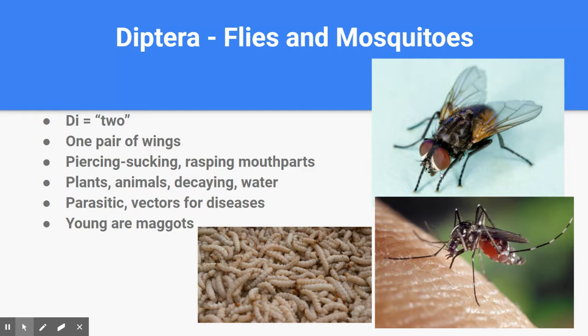Our next group is Diptera — the flies and mosquitoes. In science, 'di' means two, as in dihydrogen meaning two hydrogen atoms. However, the reason flies and mosquitoes get this name is that they only have one pair of wings. Most insects have two pairs; flies and mosquitoes only have one. That's a key identification clue — if you can't tell whether you have a fly or a bee, check the total number of wings.